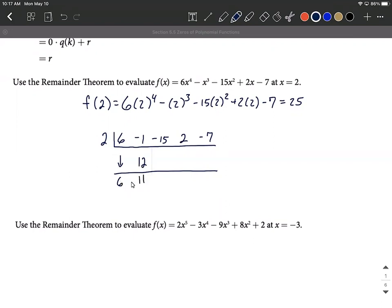Back to multiplying, 2 times 11 makes 22. Adding negative 15 plus 22 makes 7. Multiply, 2 times 7 makes 14.